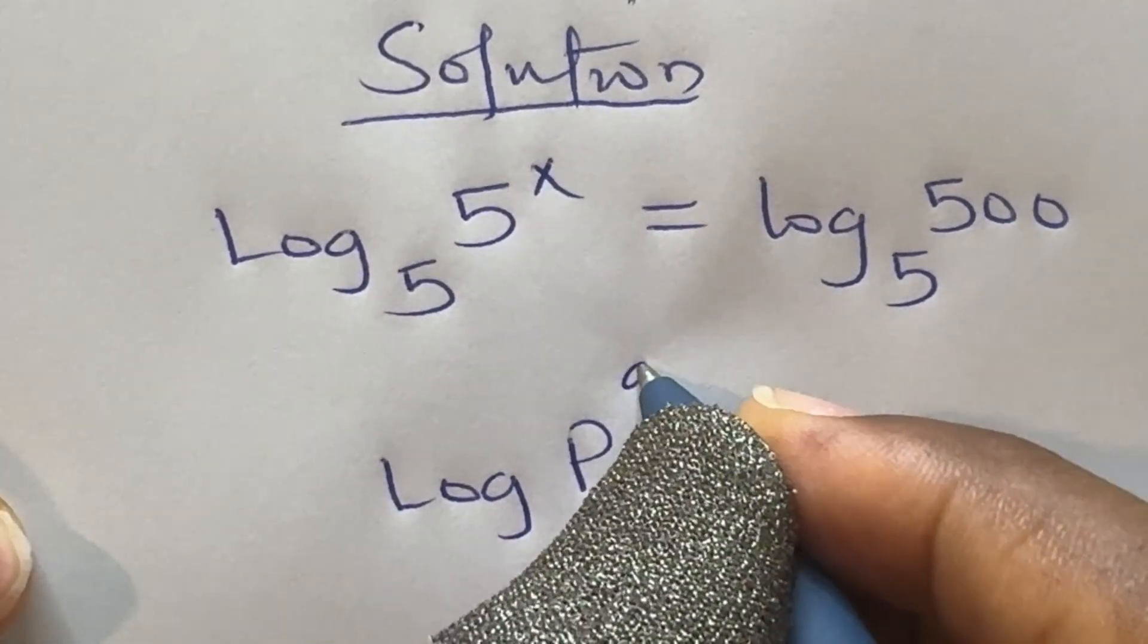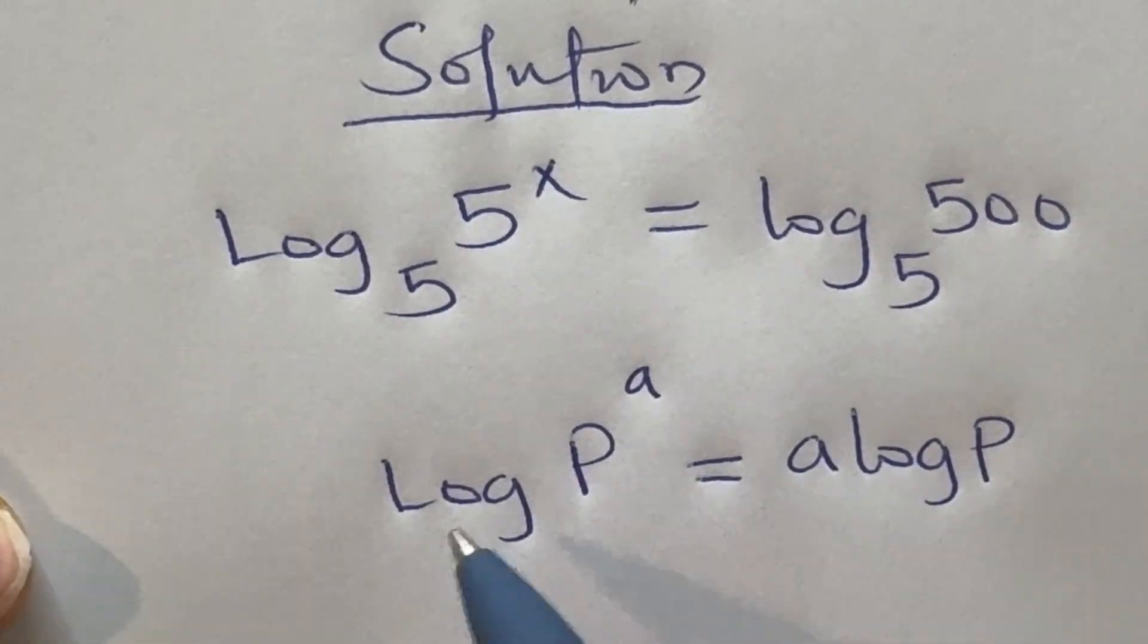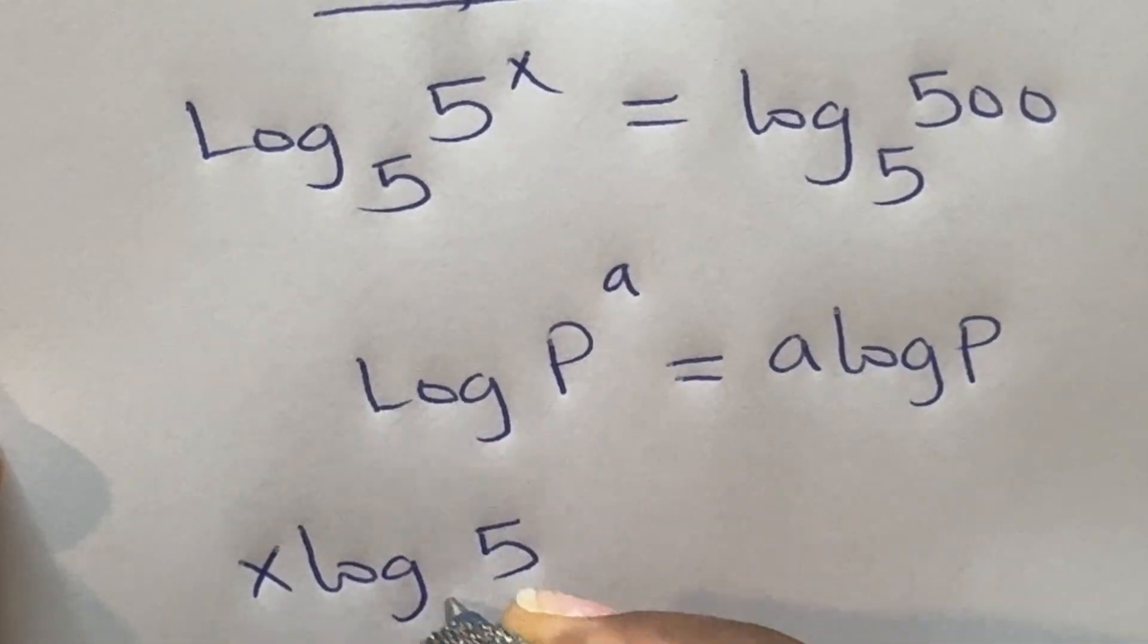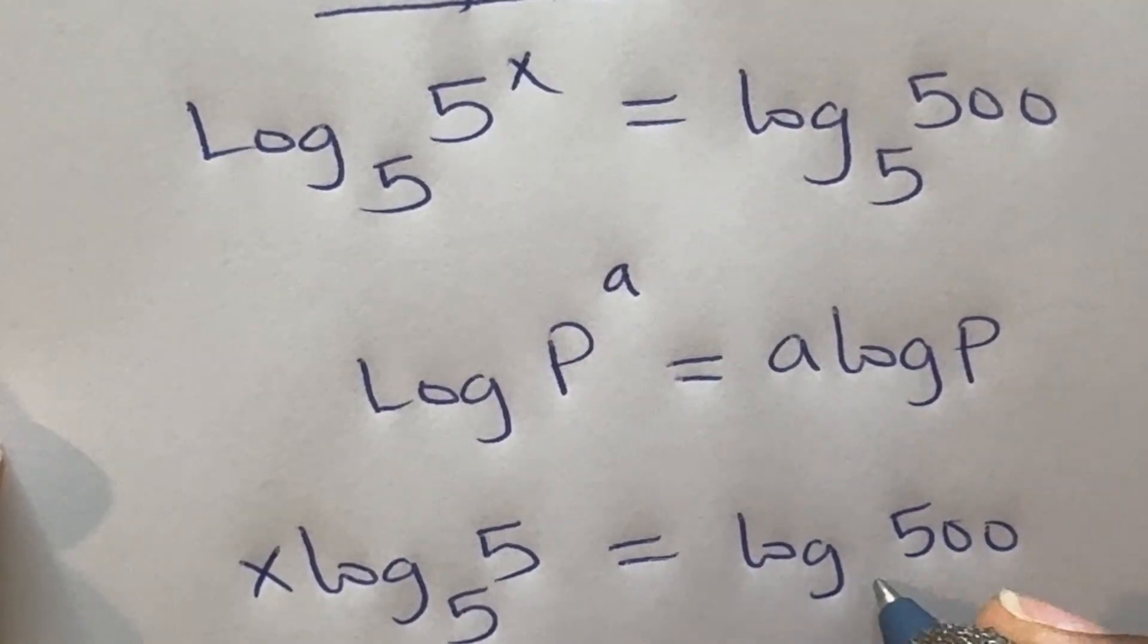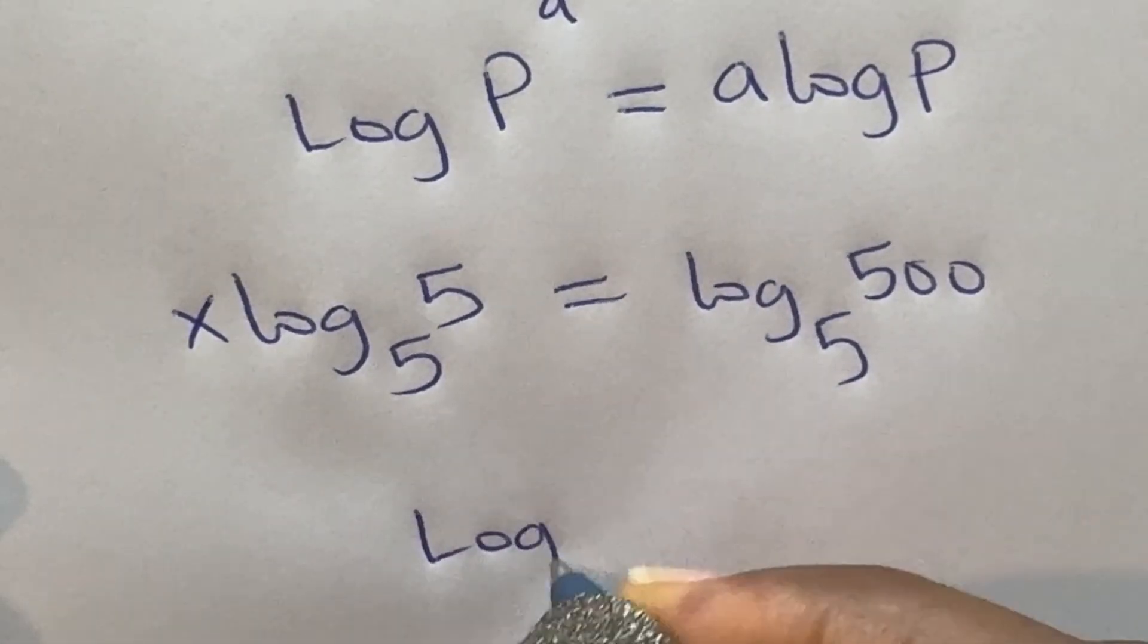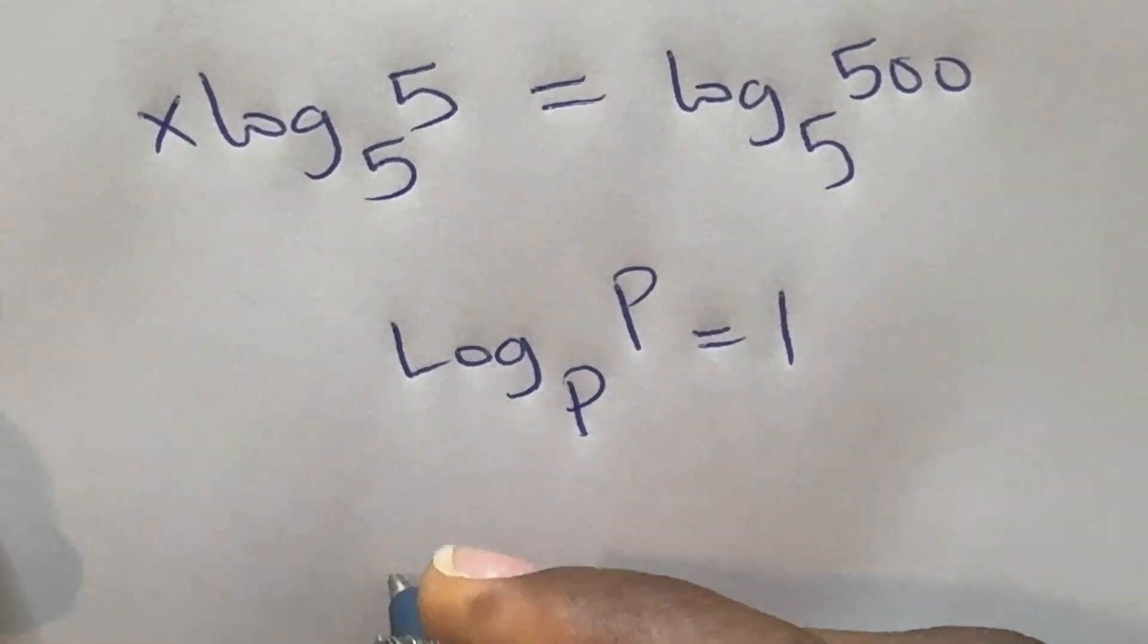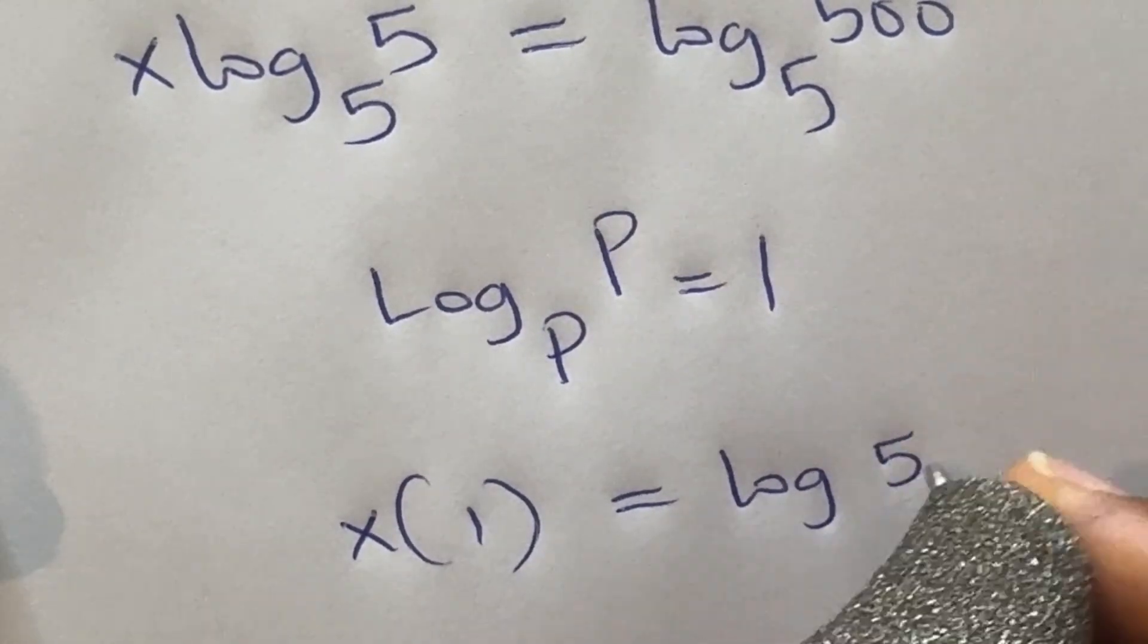Log p raised to power a is equal to a log p. We're going to use this law of logarithm to transfer this x to the back like this: x log 5 base 5 is equal to log 500 base 5. By logarithm, log p base p is always 1, therefore log 5 base 5 here will be 1, so we would have x times 1 is equal to log 500 base 5.